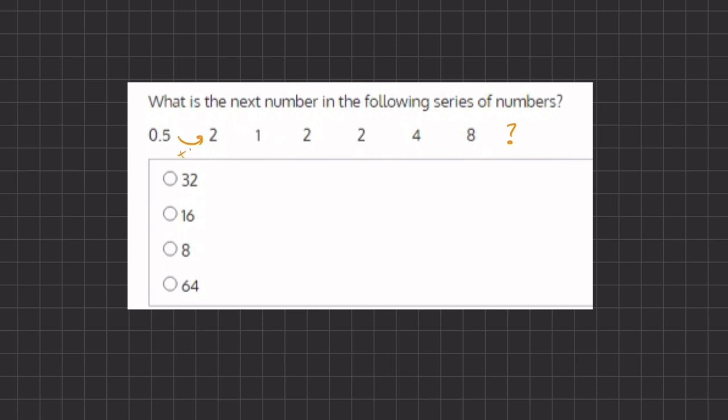From half to 2, we multiply by 4. From 2 to 1, we are multiplying by half. From 1 to 2, we multiply by 2. From 2 to 2, we are multiplying by 1. From 2 to 4, we multiply by 2. And from 4 to 8, we are again multiplying by 2.